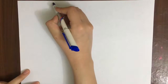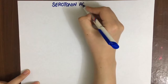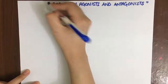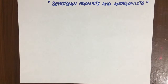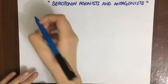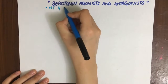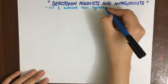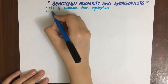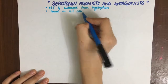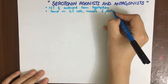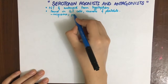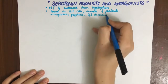In this lecture we are talking about serotonin, or 5-hydroxytryptamine, agonists and antagonists. Serotonin is a neurotransmitter and an autocoid, meaning it is produced locally and has local effects. It is synthesized from tryptophan by hydroxylation followed by decarboxylation. It is found in GI cells, neurons, and platelets, and is involved in many conditions such as migraine, psychosis, GI disturbances, and sleep disorders.